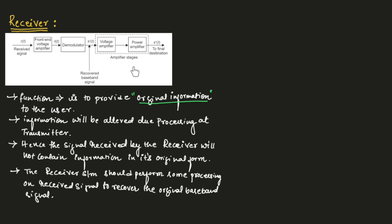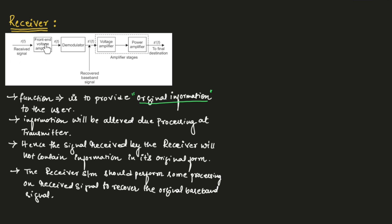This figure shows the block diagram of a typical receiver section. The received signal R(t) will be amplified using a voltage amplifier. This is done to strengthen the received signal, because the received signal will be weak, making it easier for further processing.